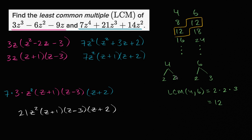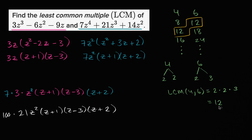This is the exact same process we use when finding least common multiples of regular numbers — we look at their factors, in the case of numbers their prime factors, and the LCM has to be a superset containing all of those factors. I could multiply the result by 100 and it would still be a common multiple, but it wouldn't be the least common multiple. Just like 1200 is a common multiple of 4 and 6, but 12 is the least. Hopefully you found that interesting.